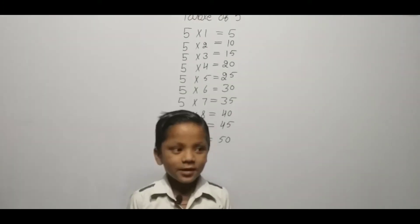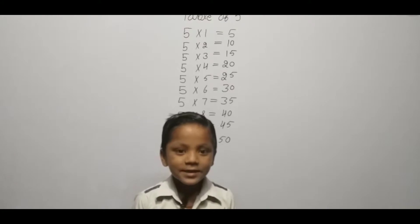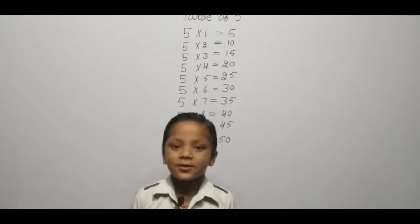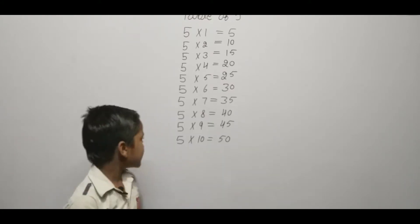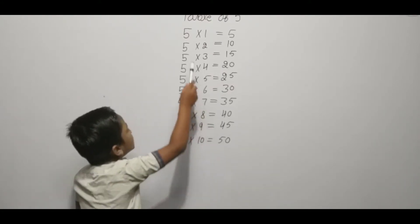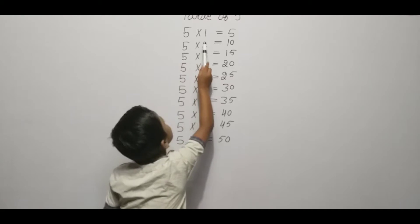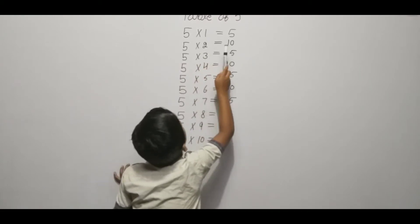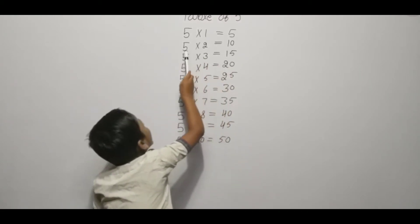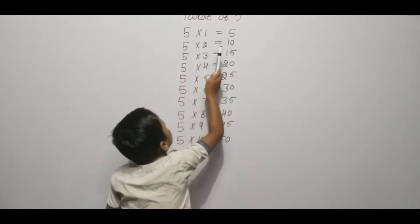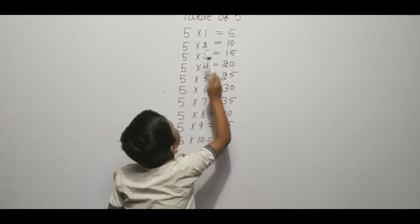Hello friends, we are learning table of five. Five one ja five, five two ja ten, five three ja fifteen, five four ja twenty, five five ja twenty-five.